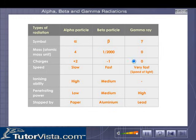The gamma rays are not made up of any particles. They have the least ionizing power.